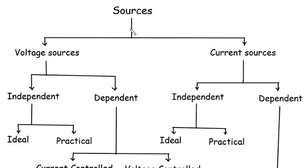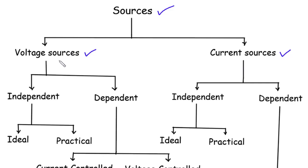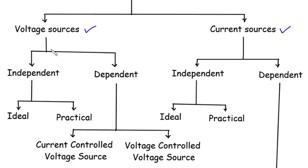Hello everyone, and welcome to this video where we will delve into the fascinating world of electrical sources. In particular, we will explore the two main types: voltage sources and current sources. By understanding the classification of these sources, we can gain a deeper understanding of their behavior in circuits. Voltage sources are devices that provide a fixed potential difference or voltage across their terminals — they supply electrical energy in the form of voltage. Voltage sources can be further classified into two main branches: independent and dependent sources.